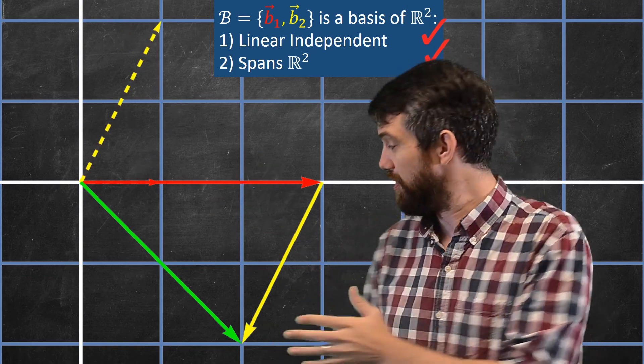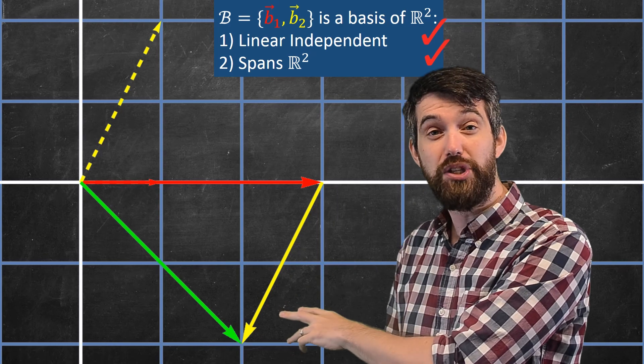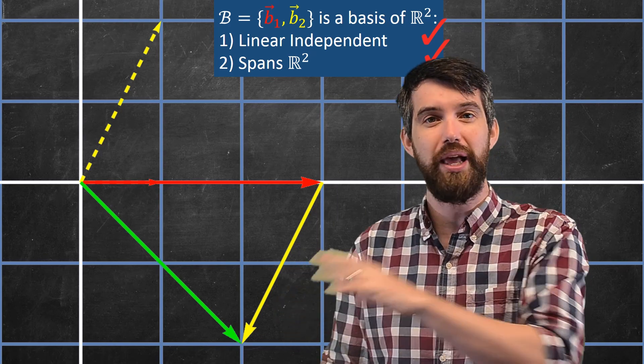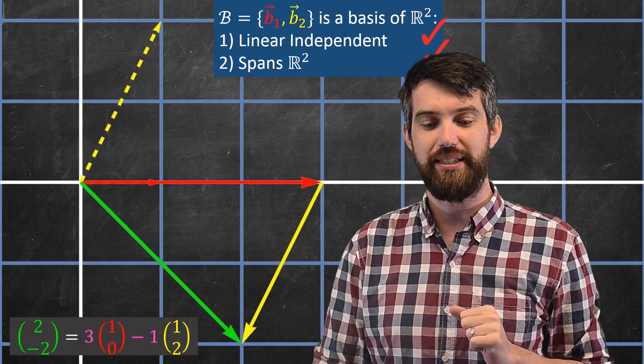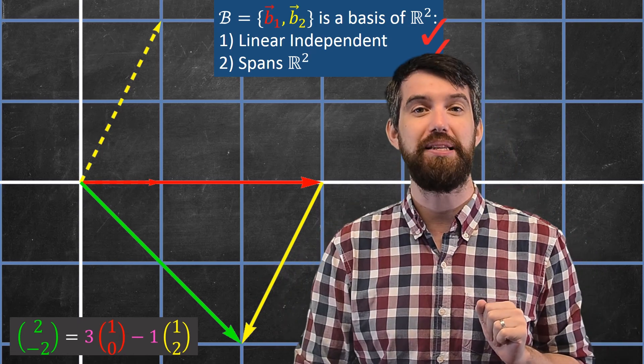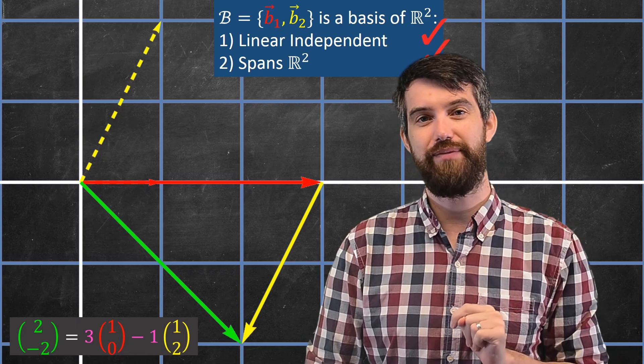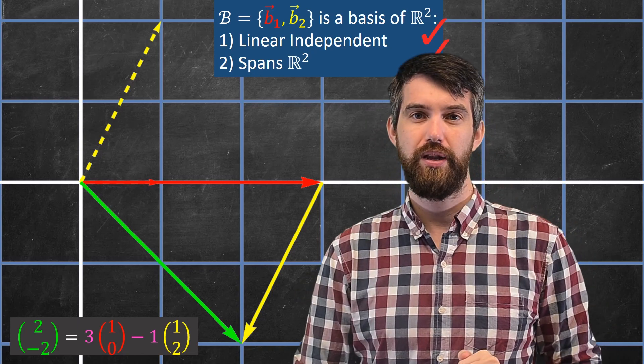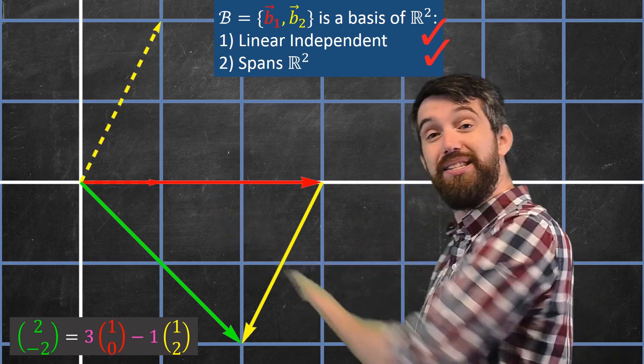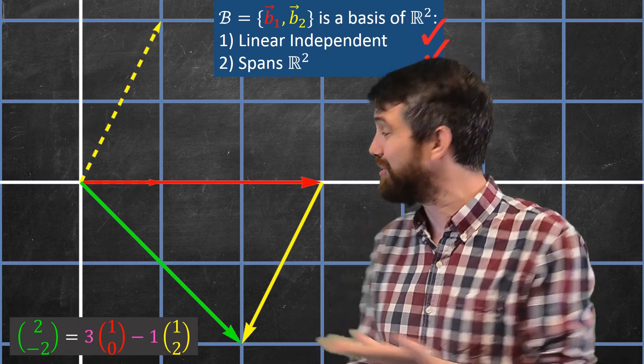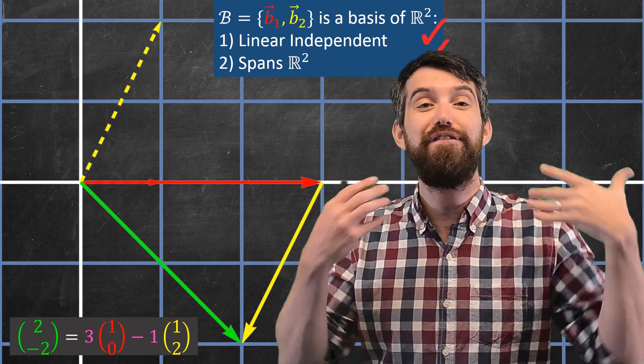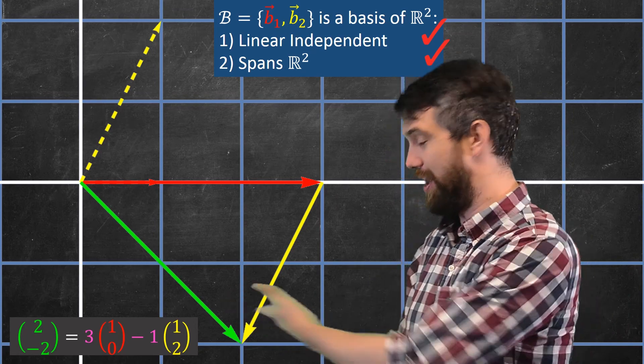Well, it turns out that the same vector, the same green vector we saw before, the same (2, -2), but now I can write it like this. I can write it as three times the first basis vector, the (1, 0), and minus one times the second basis vector, the (1, 2). So, it is indeed in the span of these two vectors, the green vector is in the span of the two vectors, and I found the linear combination that it can be described as.